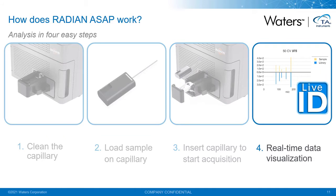Step four is getting your results. LiveID allows you to match your sample either against a library or a statistical model in real time, giving you library matches or sample classifications as you're running, depending on your chosen workflow. You can also use automatic processing via OpenLynx for a mass confirmation workflow, or with IonLynx to generate automatic reports based on ratiometric analysis or for semi-quantitative methodologies using an internal standard.